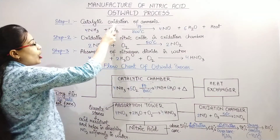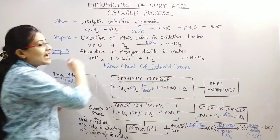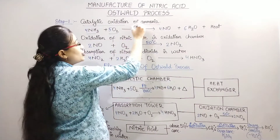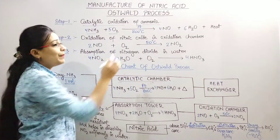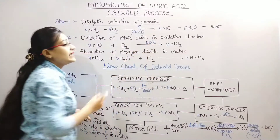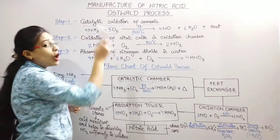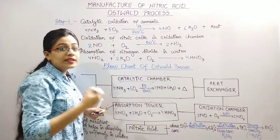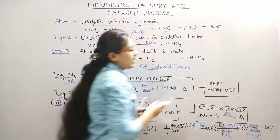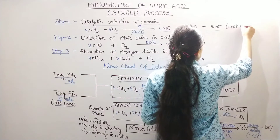In the Catalytic Chamber, Ammonia Oxidation takes place in the presence of a catalyst. The Ammonia Gas reacts with the Oxygen present in the dry air. The catalyst used here is Platinum. This reaction occurs at 800 degrees Celsius. The products are Nitric Oxide gas and Water Vapours. This reaction is exothermic — heat is liberated.